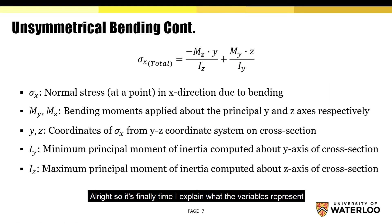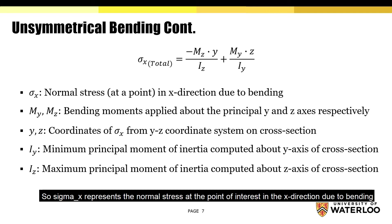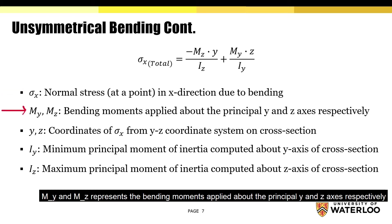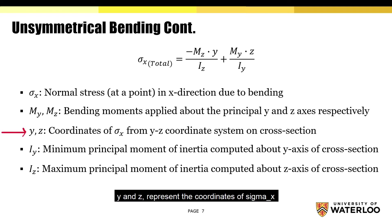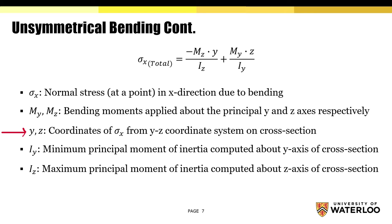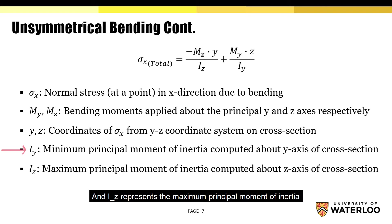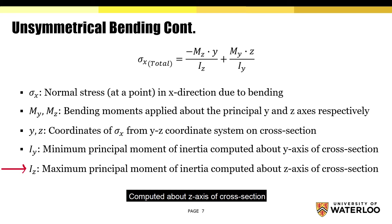So it's finally time to explain what the variables represent. Sigma x represents the normal stress at the point of interest in the x direction due to bending. My and Mz represent the bending moments applied about the principal y and z axes respectively. y and z represent the coordinates of sigma x based on the yz coordinate system on the cross section. Iy represents the minimum principal moment of inertia computed about the y axis of the cross section. On the following slide, I'll go into more detail regarding the axes.